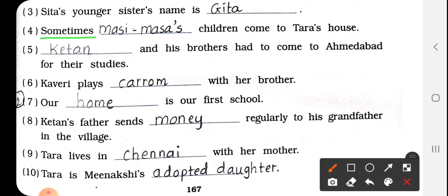Number 4: Sometimes, Dash children come to Tara's house. Sometimes किसके बच्चे तारा के घर पर आते हैं? तो मासी और मासा के बच्चे. Answer: Masi — M-A-S-I — and Masa — M-A-S-A.